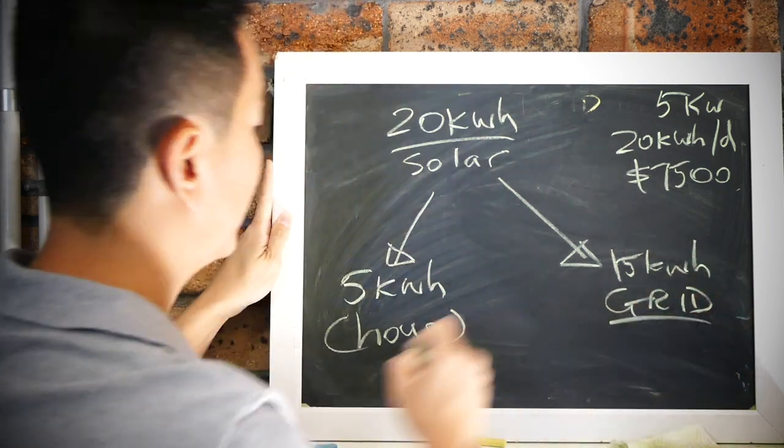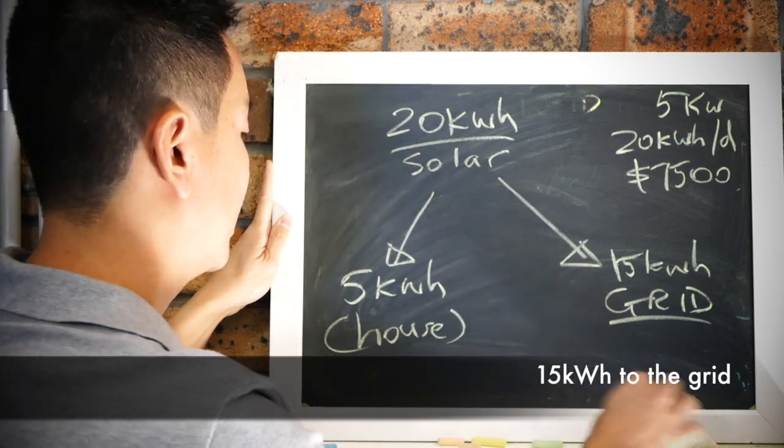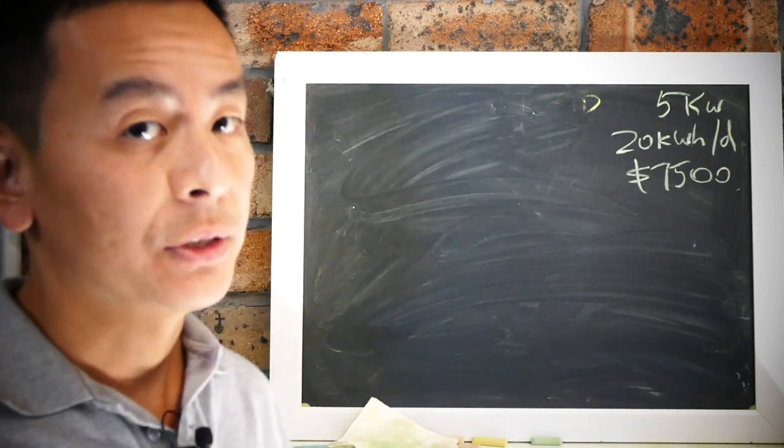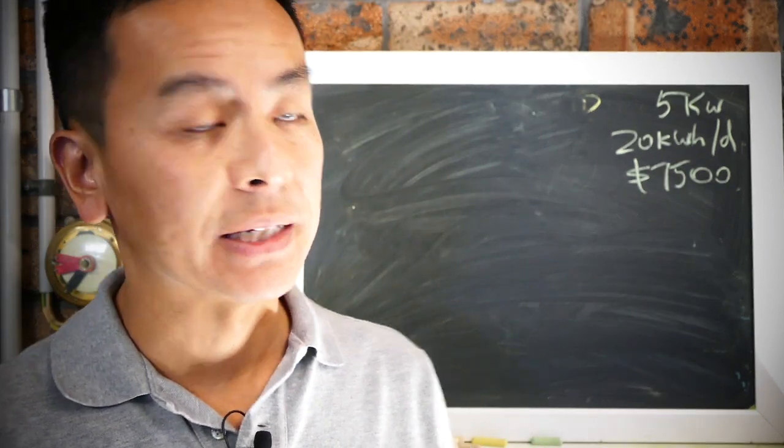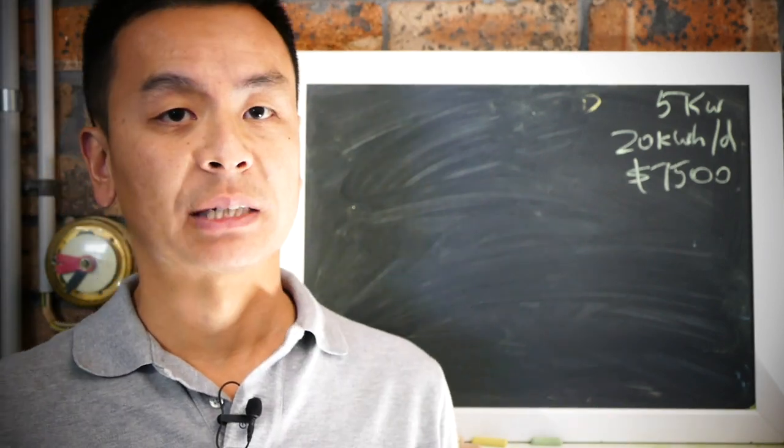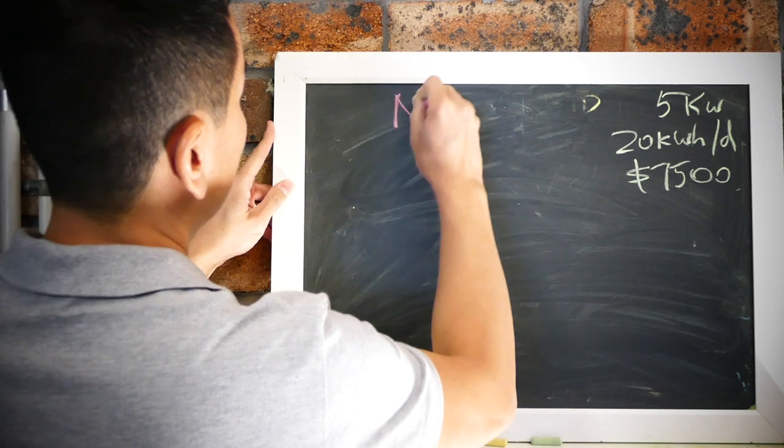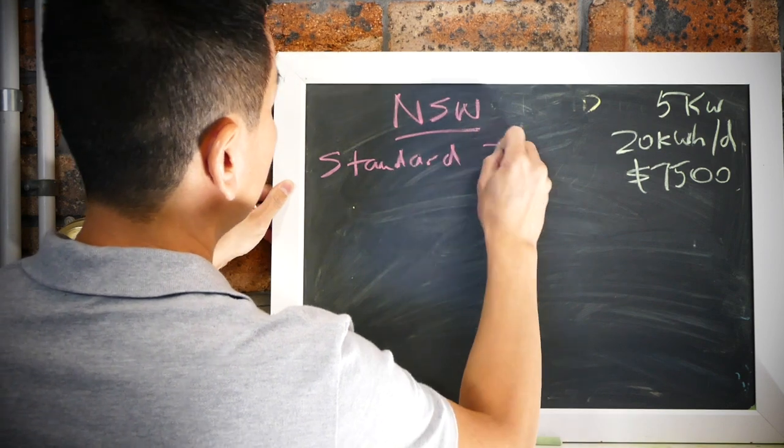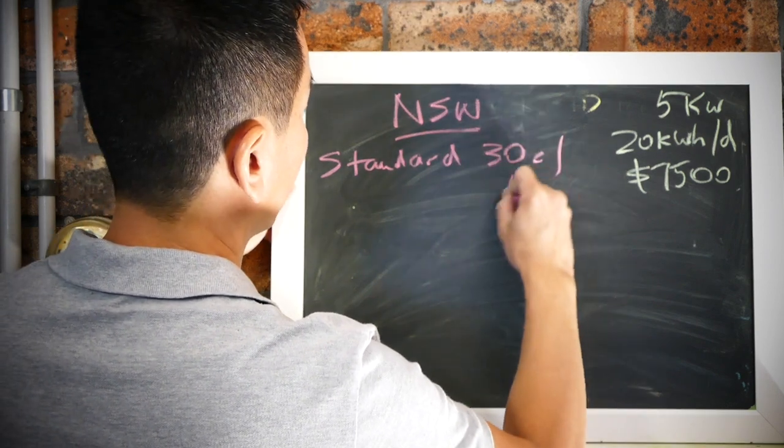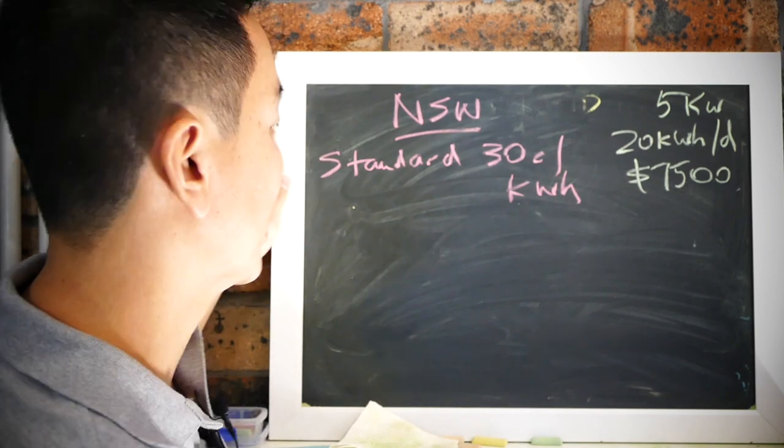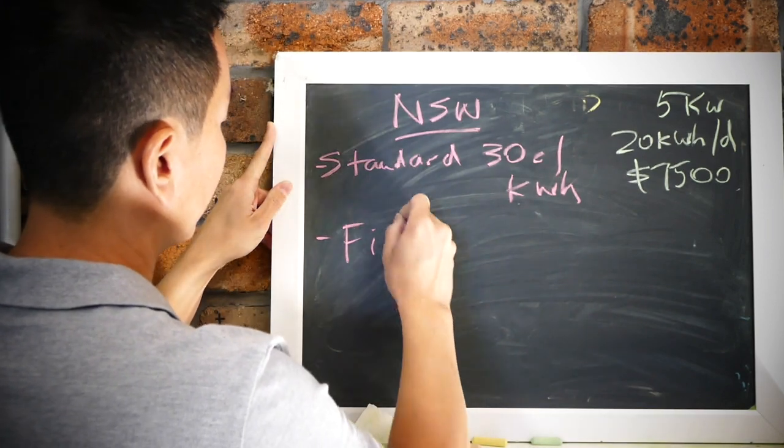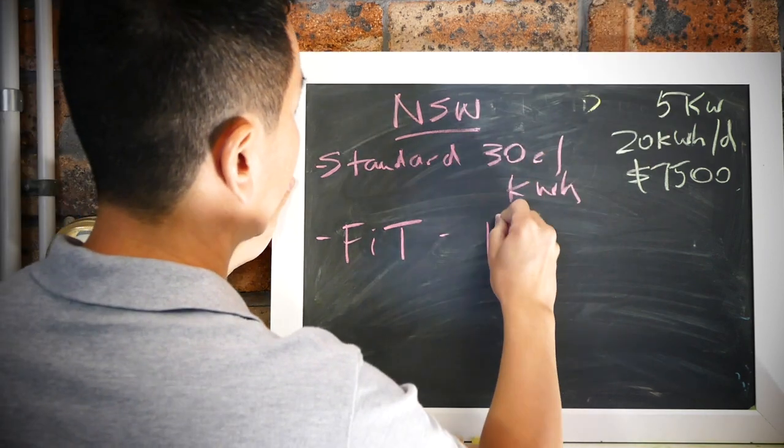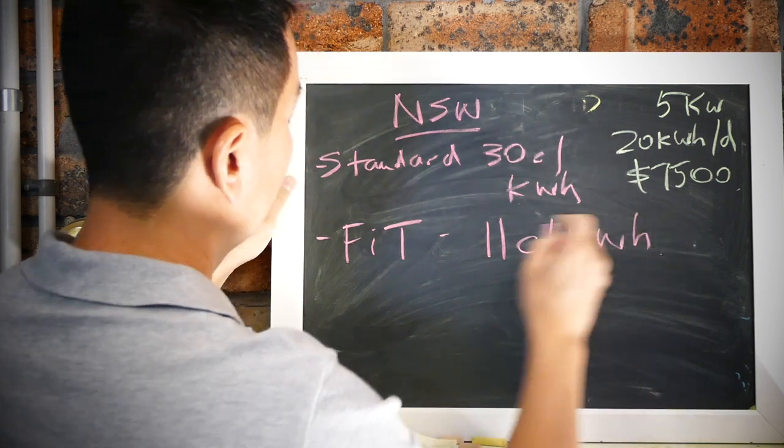All right, now electricity in New South Wales is expensive. I've seen all your comments, we have some of the most expensive electricity in the world, that's just a fact unfortunately. So New South Wales, most people here pay a standard tariff of 30 cents per kilowatt hour. A feed-in tariff, which is how much you get for feeding the excess solar production back to the grid, is currently at 11 cents per kilowatt hour.